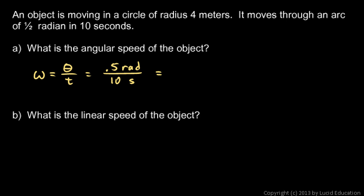So we'll just divide. 0.5 divided by 10 is 0.05, and you see the units, radians per second. So that's the amount of angle per time, 0.05 radians per second. Not too bad.